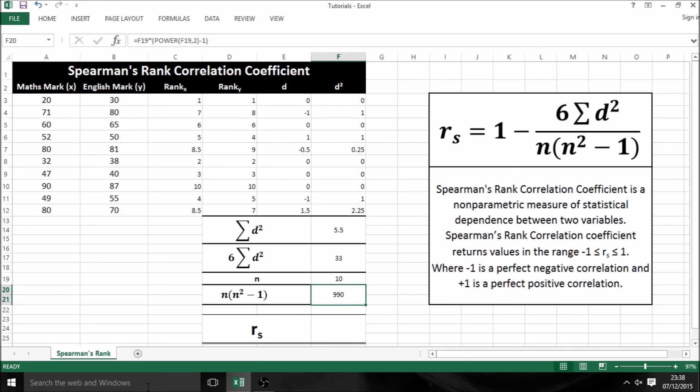Now for the value of Spearman's rank correlation coefficient, I'm just going to combine this value and this value into this formula, and we should get our answer. To do this, just type in equals, then 1 minus, open brackets, 33 over 990, then close our brackets. When we get our value, it's 0.96 recurring, and this indicates that our values of x and y up here have a very strong positive correlation.